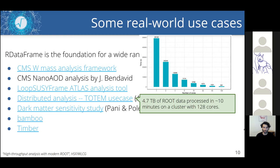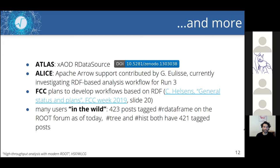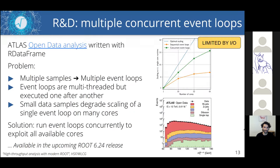Another example is where we process compressed ROOT data at two gigabytes per second — the TOTEM use case, which was a distributed analysis over a cluster presented at EuroPar last year. There is also the Bamboo software framework, which achieved a high turnaround for analysis on CMS data. These are just the use cases we know of — on our forum, posts tagged with RDataFrame have reached roughly the same count as those tagged with TTree or Hist.